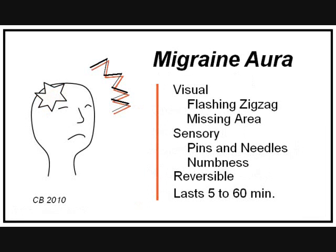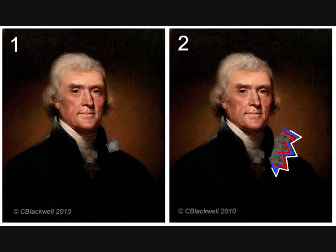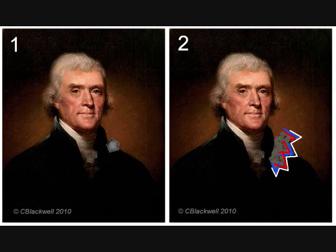The aura is a sensory disturbance that occurs with the migraine episodes. It can involve vision, sensation, or movement. 30% of people with migraine have the aura. Here is the beginning of a typical visual display. First, there is a little missing area, like in the picture on the left, which grows over a few minutes into a crescent of zig-zag flashing lights, like the one on the right. Some describe it as like a kaleidoscope.